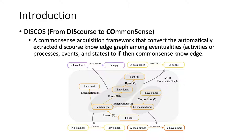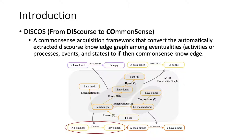In order to tackle the above issues, we propose a novel framework, Discourse, from discourse to common sense knowledge. It is a framework that converts the automatically extracted discourse knowledge among eventualities to if-then common sense knowledge. For example, the discourse eventuality graph contains relationships like 'I am hungry' results in 'I have lunch,' which can be naturally regarded as if-then common sense knowledge: if X is hungry, then X will want to have lunch — the same format as Atomic.